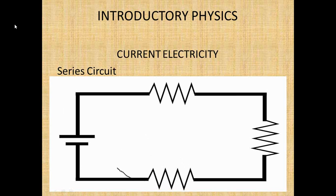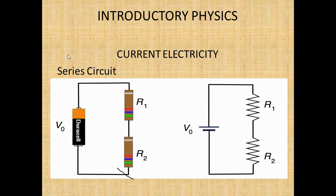Here is another circuit in series. You have the battery and two loads — two electrical devices, which could be lamps or something else. This is how you draw the circuit. The longer limb is the positive pole, the shorter limb is the negative pole. The battery provides the electrical potential difference. The charge flows from the positive terminal through the wire, through each load, and back to the negative terminal.